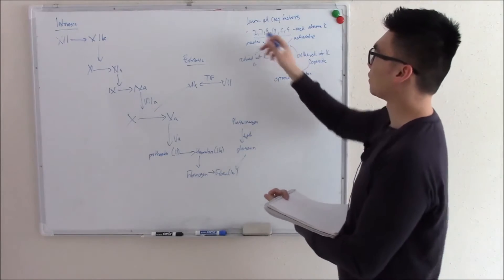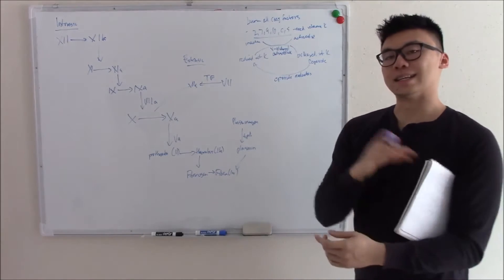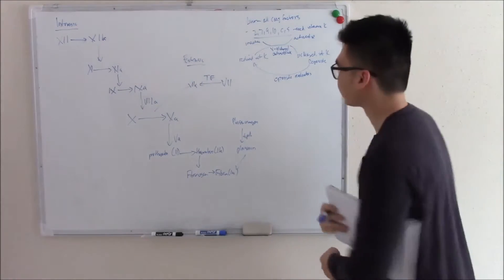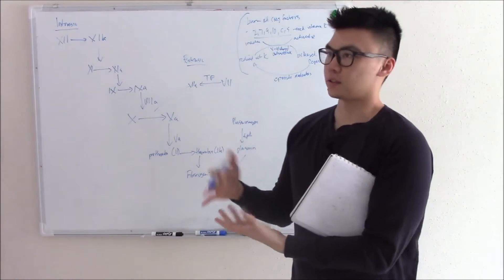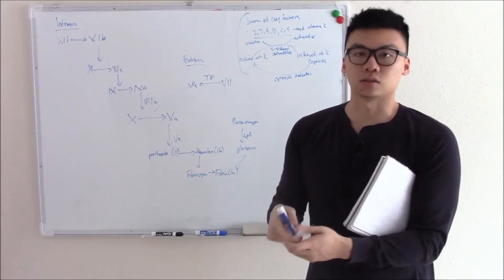And that is the importance of the factors 2, 7, 9, 10, and C and S. They need vitamin K. So that's how your liver makes and regulates all your factors. If you have a decrease in these coagulation factors then you have a problem making clots. So you'll bleed.